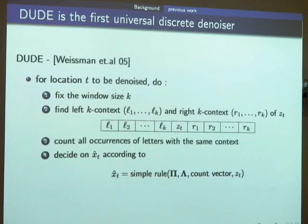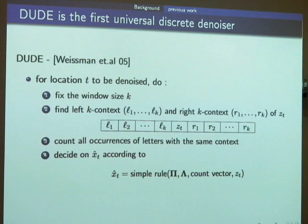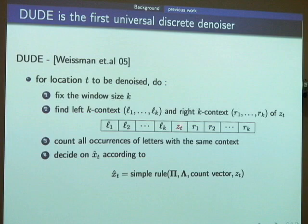The contexts are noisy as well. DUDE searches over the whole noisy data where it has the same context, and counts what kind of symbol occurs at the middle point and how many times.